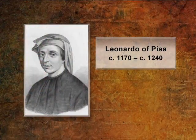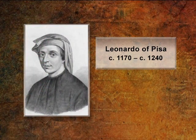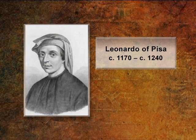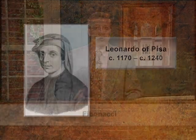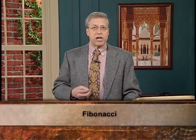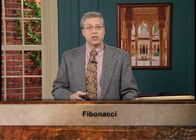One of the most important Italian mathematicians of this time was Leonardo of Pisa. He sometimes wrote his name as Leonardo Pisano, and he also sometimes referred to the family he was from — the Bonacci family. He referred to himself as a son of Bonacci, or Fibonacci in Italian. And today he is best known simply as Fibonacci.